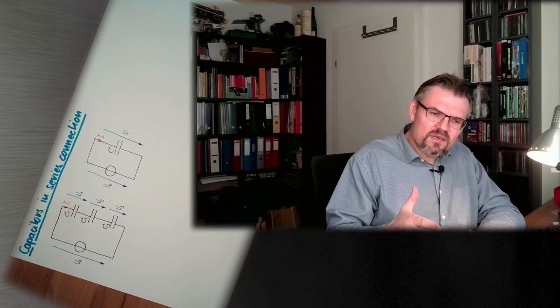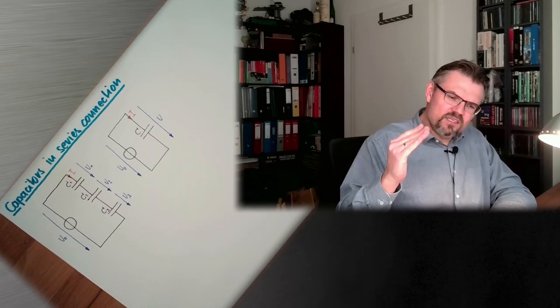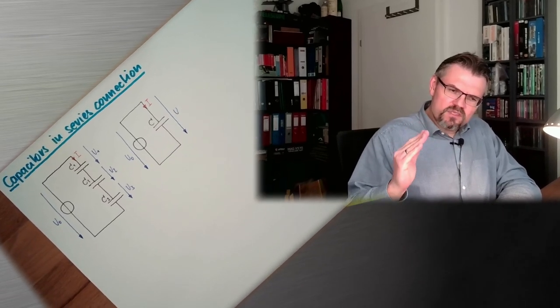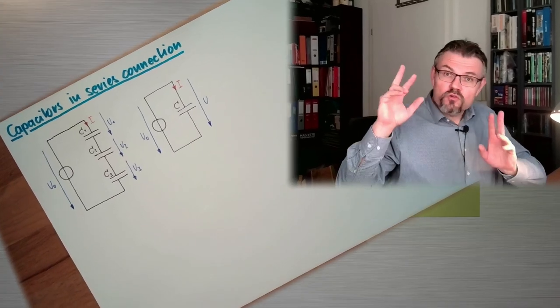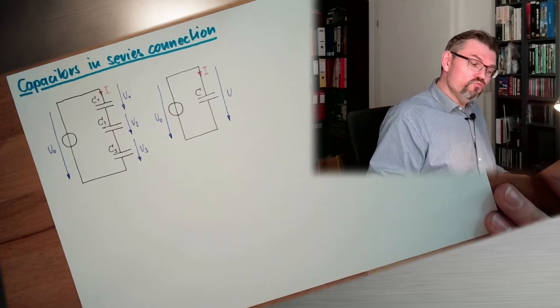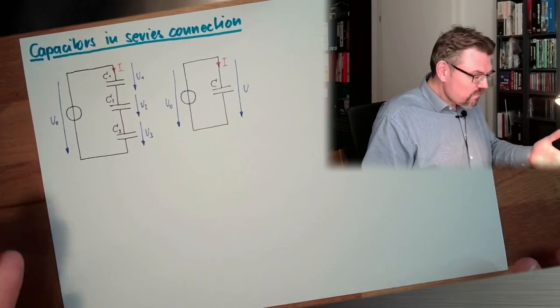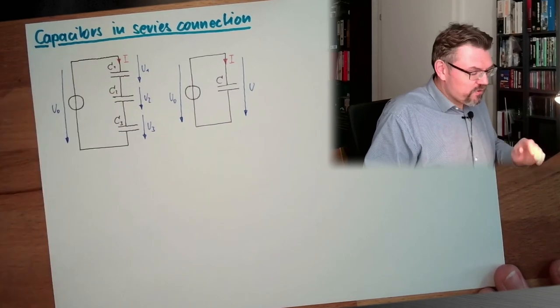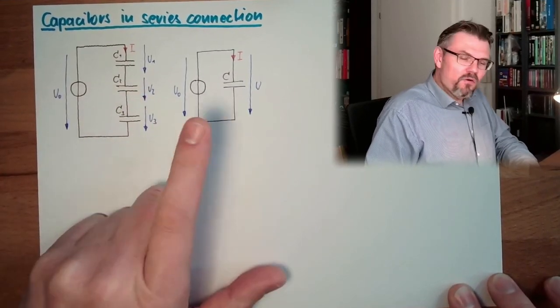So we want to replace, like we did with the resistors, we want to replace a series connection of several capacitors with one virtual replacement capacitor, which would have the same attributes. I have drawn this here, what we try to do. So here is the situation, and this is our replacement.